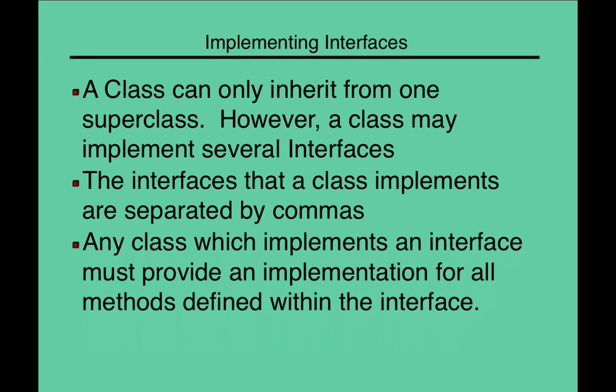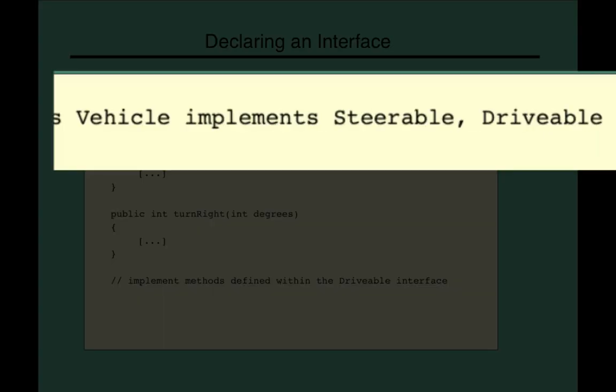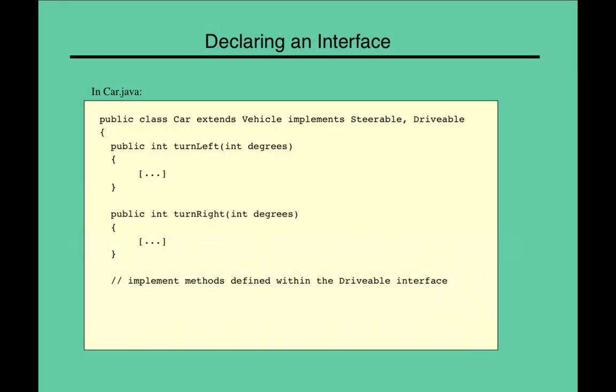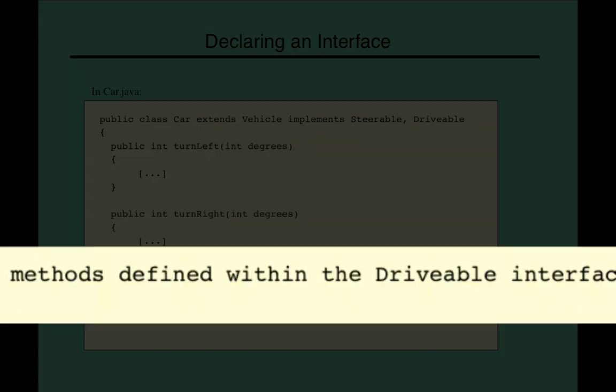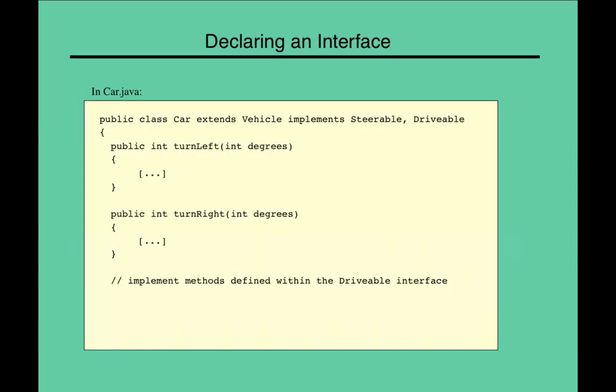Here's another example, car. Car wants to implement two different interfaces, steerable and drivable. So, we already saw earlier that steerable meant you can turn left and turn right. So, it has to include that in the definition of car. What is drivable? Well, there might be other methods like accelerate and brake or something along those lines.